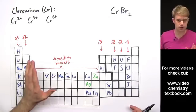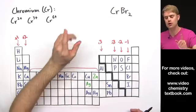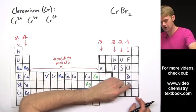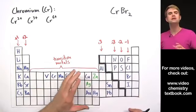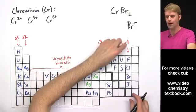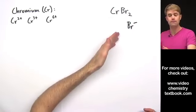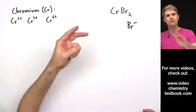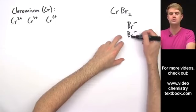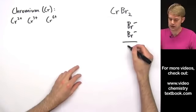The first thing we're going to do is focus in on the ion with a definite charge — the ion that can only have one charge that doesn't change. Here, that's Br. Br is in the 1- column of the periodic table, which means that in an ionic compound, Br always has a charge of 1-. There's a 2 after Br, which means we have 2 Brs in this compound, and each one has a charge of 1-. So the total negative charge is 2-.